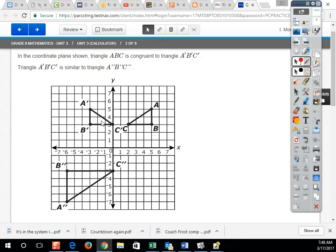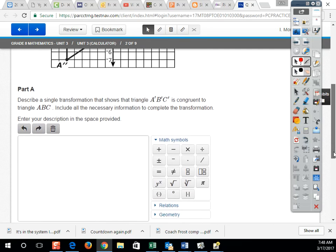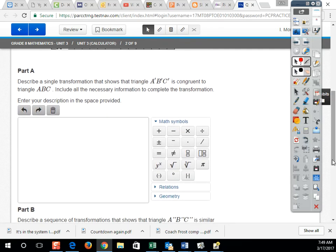And then we have another reflection and a dilation. And remember, a dilation is the only transformation that will make a shape that is larger or smaller. And it says, describe a single transformation that shows that triangle A prime, B prime, C prime is congruent to triangle A, B, C. Include all necessary information to complete the transformation.